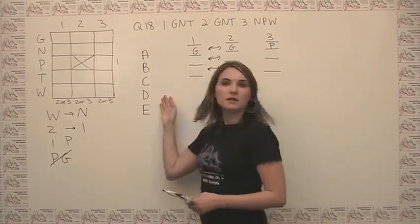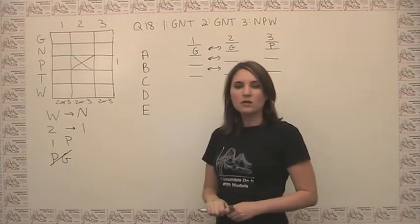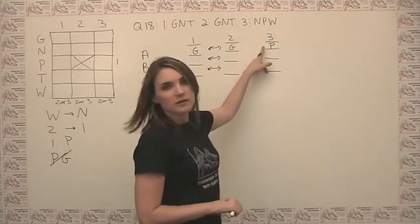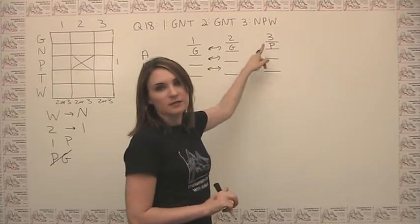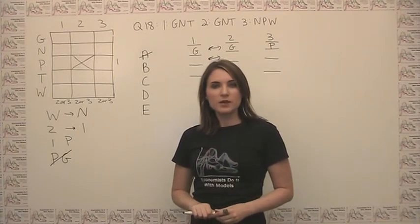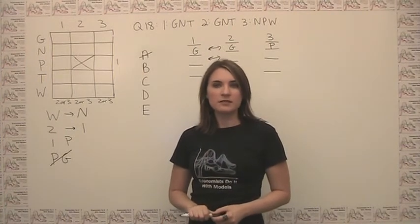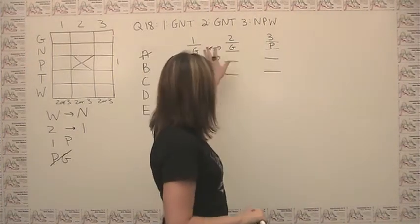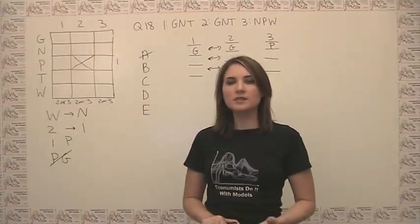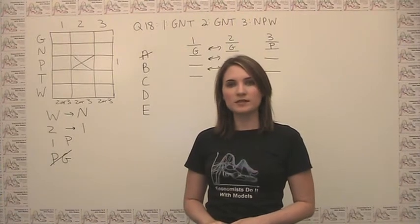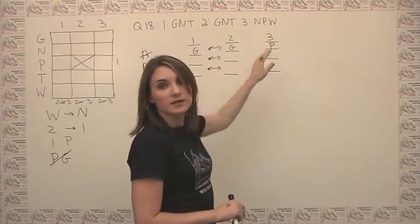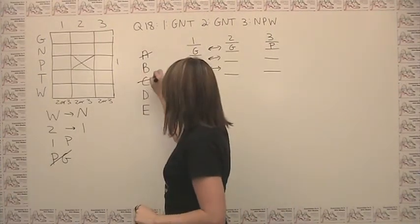So the answer choices read: only sensor 2 recycles glass. Well, no, we already concluded that only sensor 3 recycles glass. So choice A can go. Choice B reads: only sensor 3 recycles newsprint. Well, we don't know anything about newsprint yet, so we'll leave that in the running. Choice C says: only sensor 1 recycles plastic. Again, we can get rid of that one because we know that only sensor 3 recycles plastic. So we can cross out choice C.